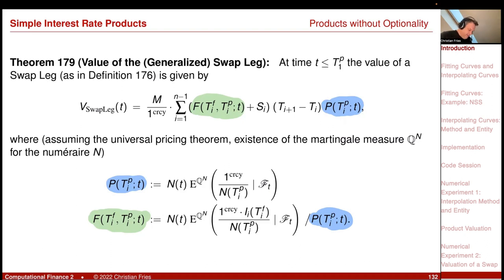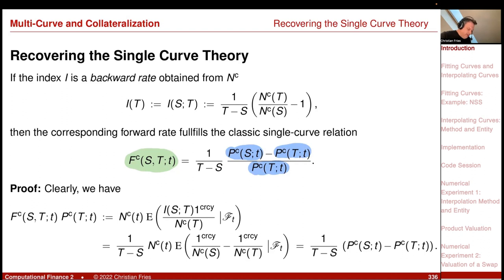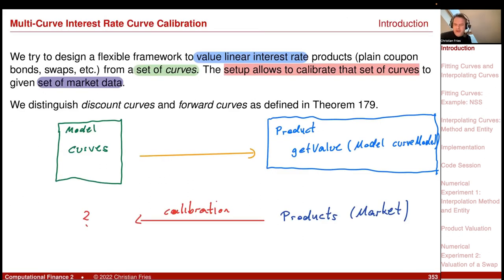Or, in the special situation of the collateralized setup where we recover the single curve theory, it could be that the forward curve is just defined in terms of the discount curve — for example, if the index is a backward rate on the collateral account, it's just a function of the discount curve. So there will be a curve that is a function of another curve, and we have to model these dependencies in our implementation.